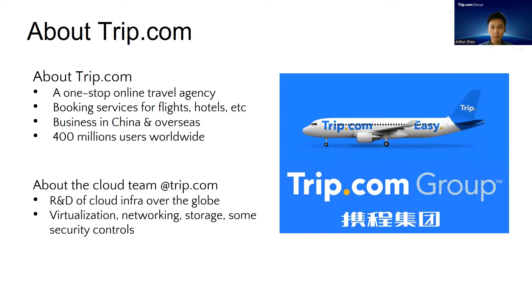Trip.com is a one-stop online travel agency with 400 million users worldwide, providing booking services such as flights and hotels. The cloud team is responsible for our infrastructure over the globe.